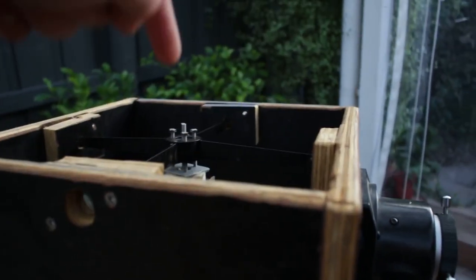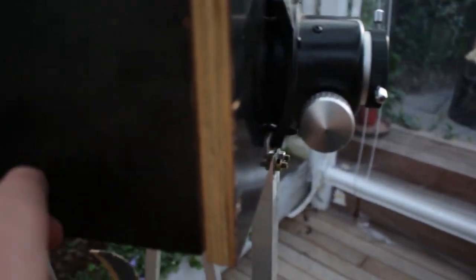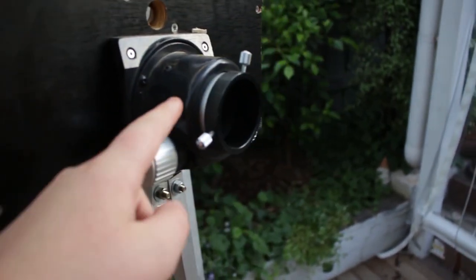So, the light will go through here, down here, hits the primary mirror, reflects back up, hits the secondary mirror, and then reflects into the focuser.